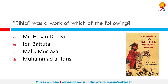Rihla was a work of which of the following? The correct answer is Ibn Batuta. Rihla refers to both the journey and the written account of that journey, or travelogue. The classical Rihla in medieval Arabic travel literature — those written by Ibn Batuta and Ibn Jubayr — includes descriptions of personalities, places, governments, customs, and curiosities experienced by these travellers, usually within the boundaries of the Muslim world.